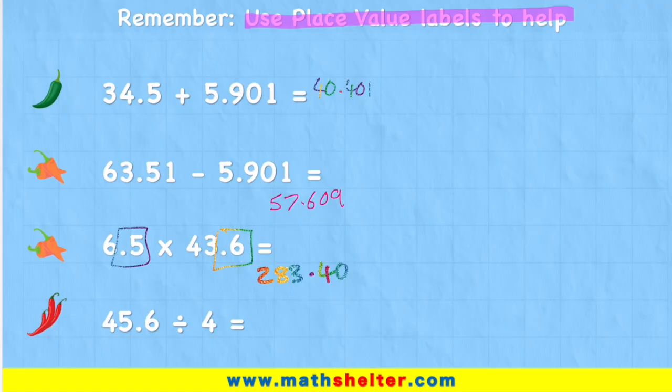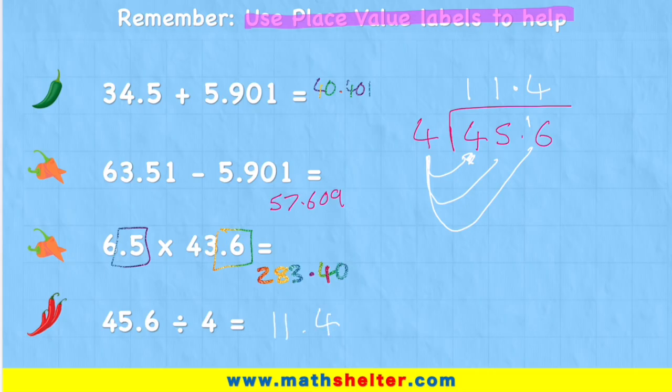And last but not least the division question. I have 45.6 divided by four. This looks really hard, but it's super simple. All I have to do: how many fours are there in my four? I have one. How many fours are there in my five? I have one, but I then have one remainder, which I'll bring over here. How many fours are in my 16? Well, there is four. Carry the decimal up and my answer is 11.4. And there you go.